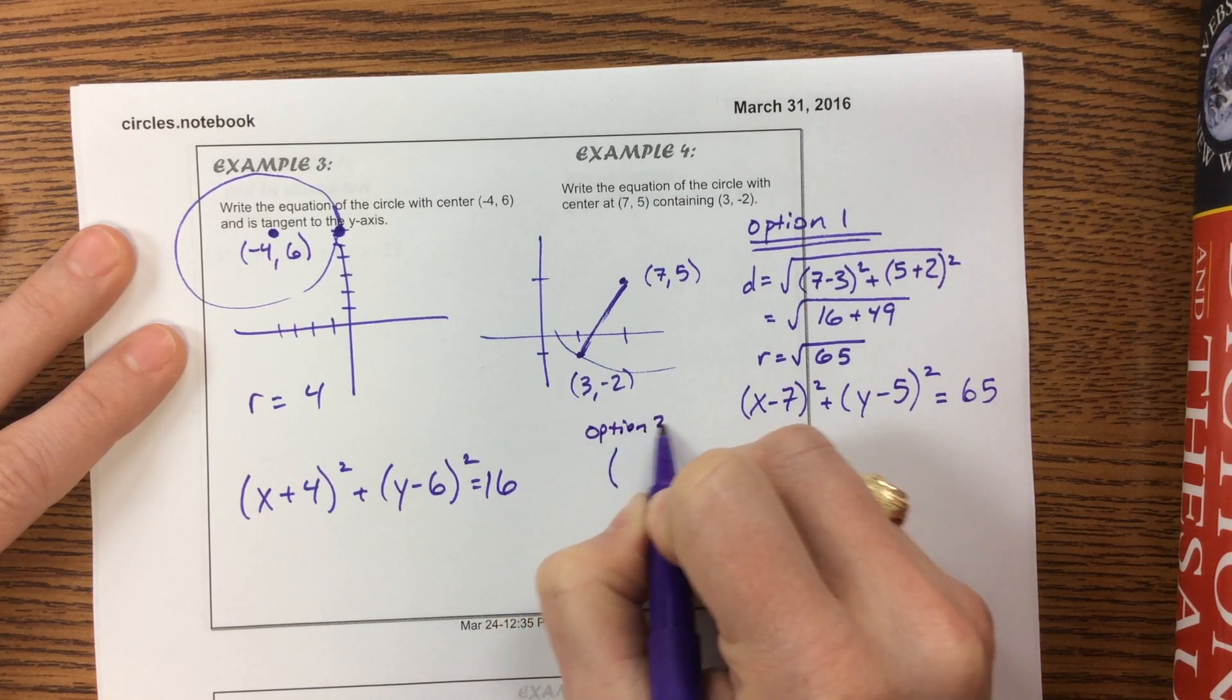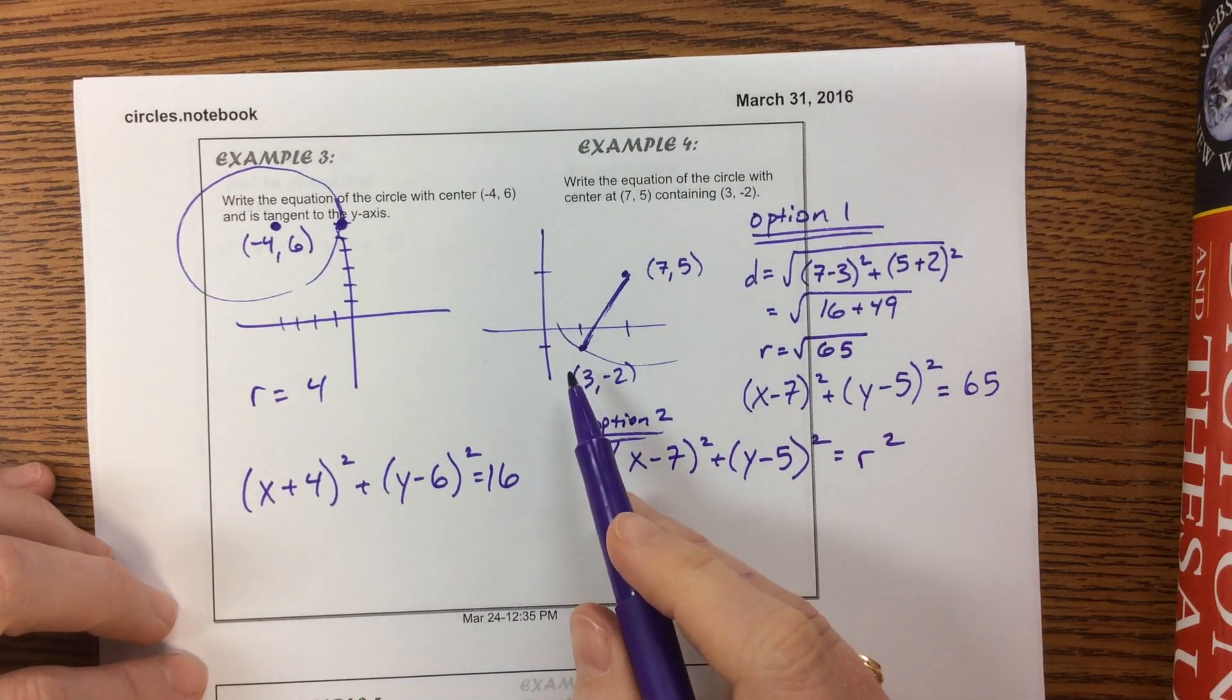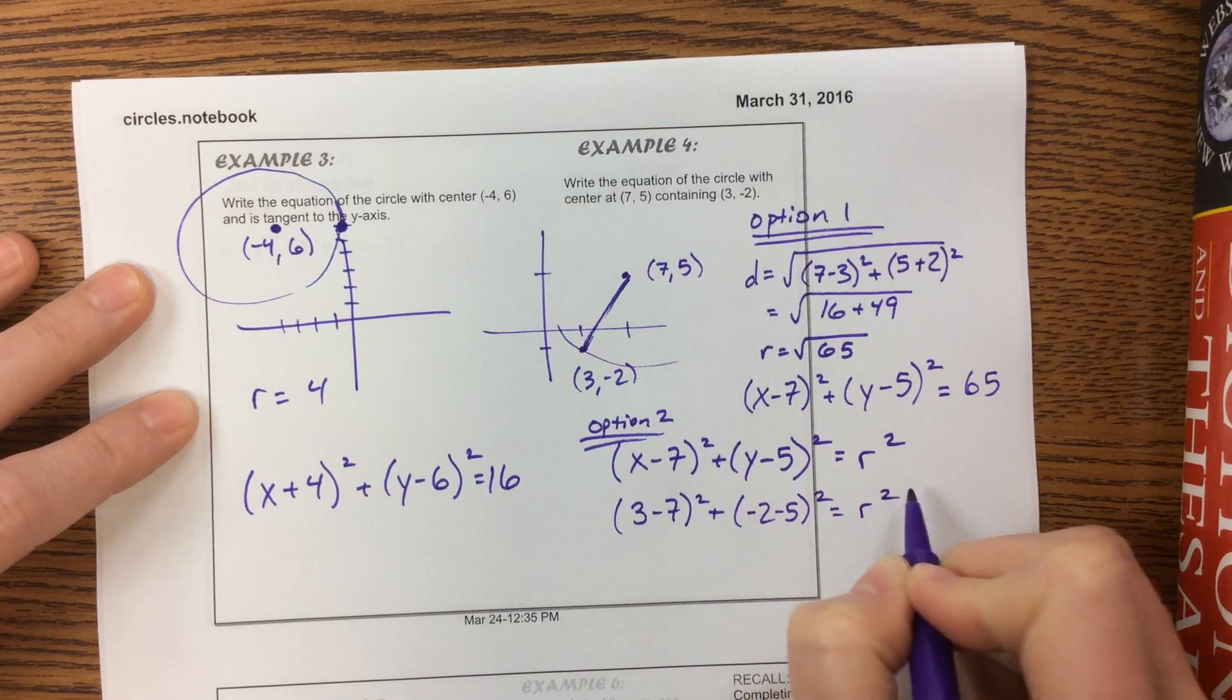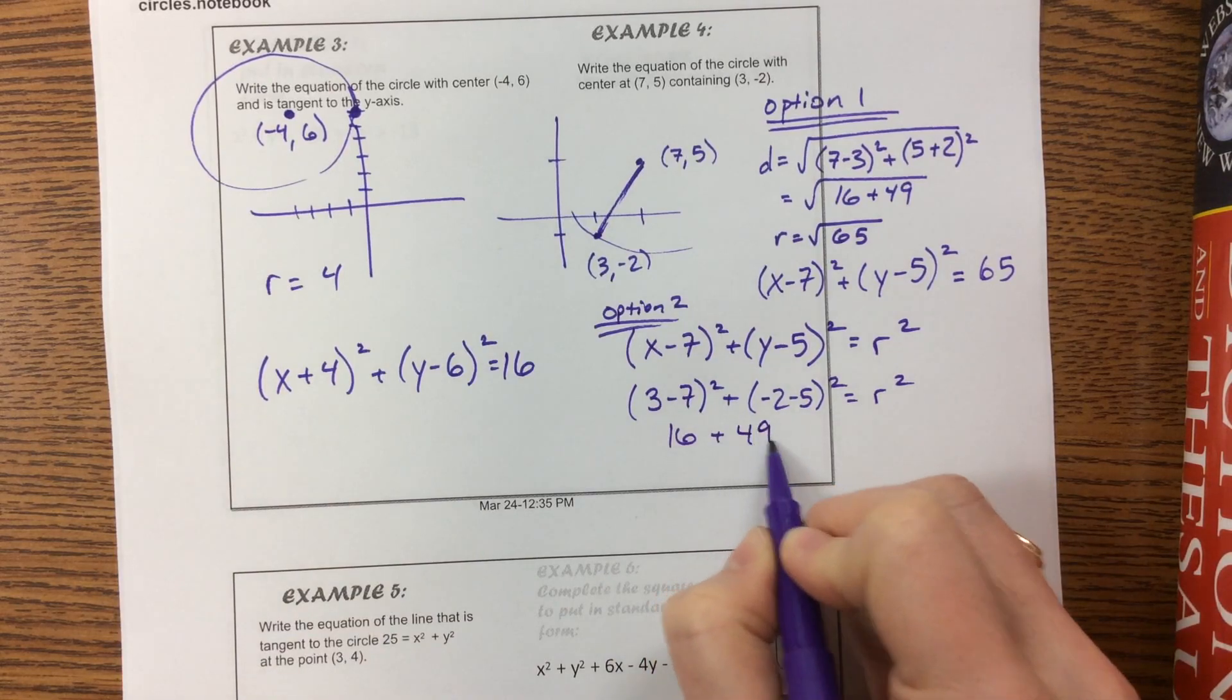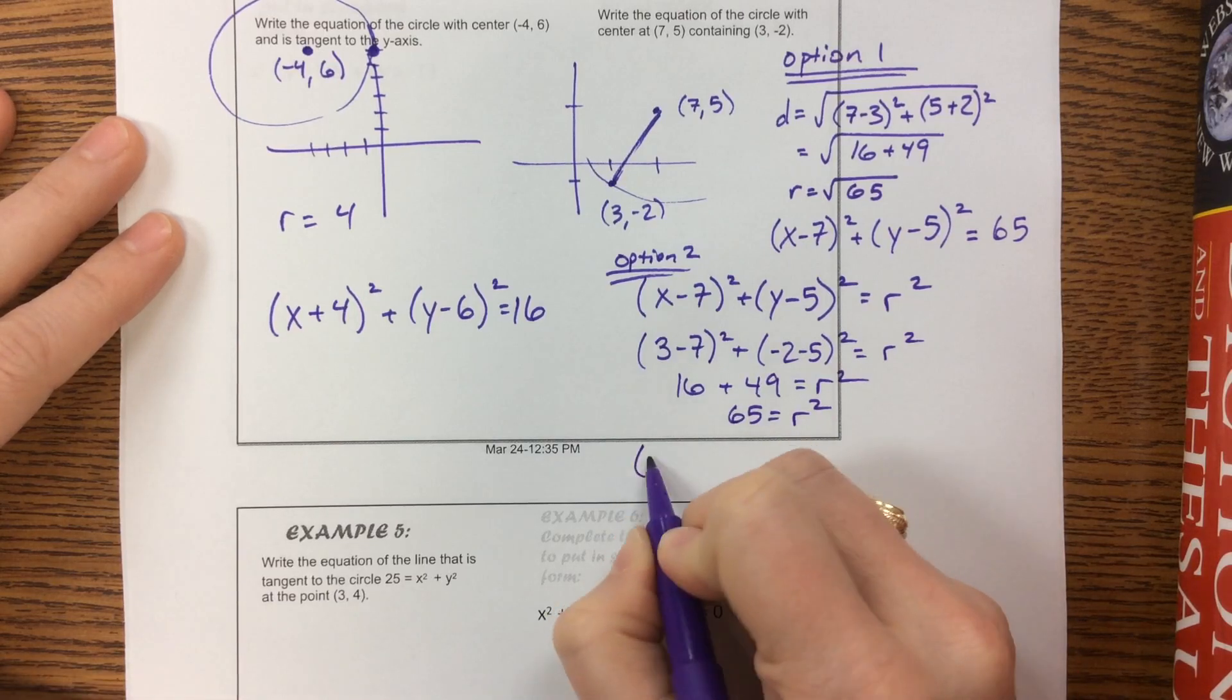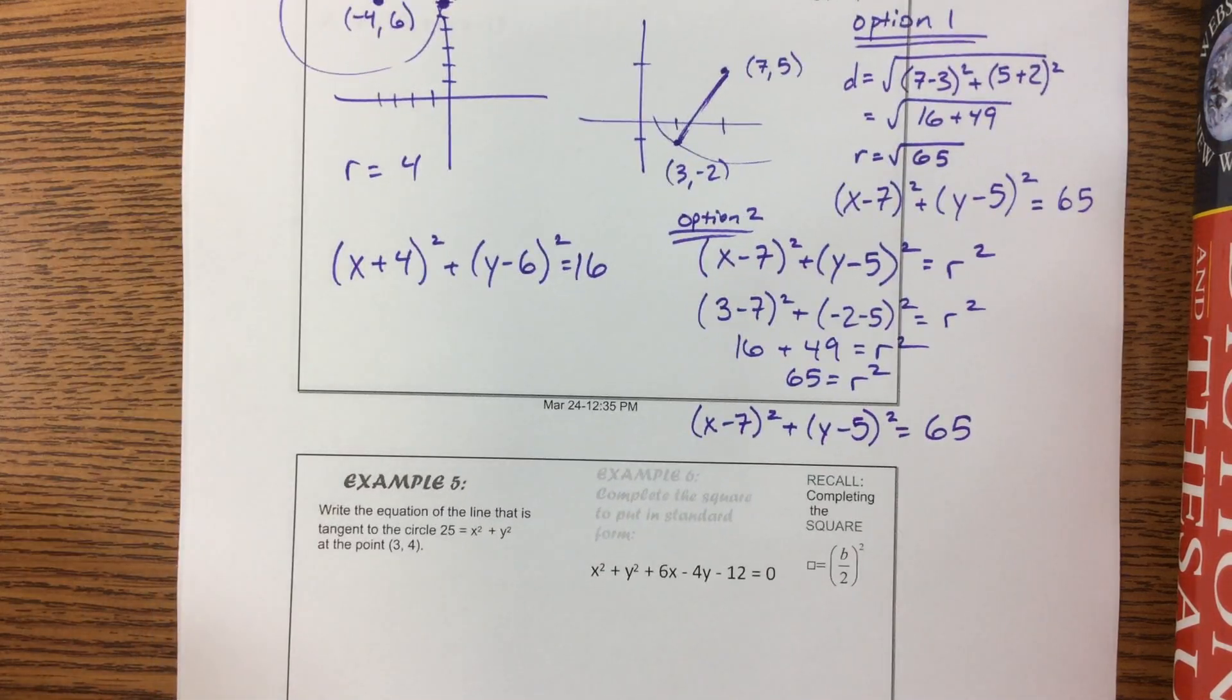Option 2: take our equation x minus 7 squared plus y minus 5 squared equals r squared, and plug in a point on the circle. So 3 minus 7 squared plus negative 2 minus 5 squared equals r squared. This is negative 4 squared is 16, negative 7 squared is 49, equals r squared. That's 65. So x minus 7 squared plus y minus 5 squared equals 65. I don't have a strong opinion which way you do it, but you have to get the right answer.